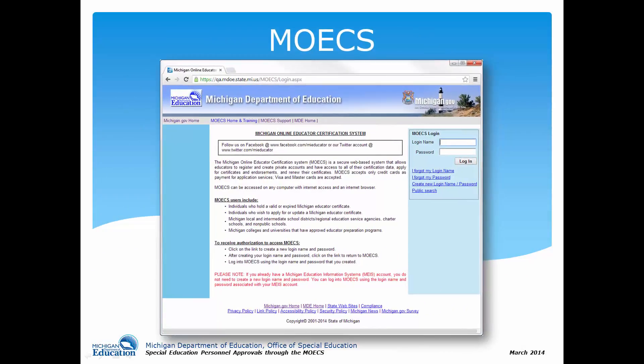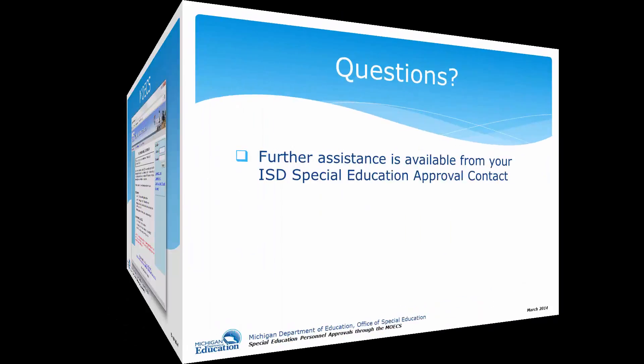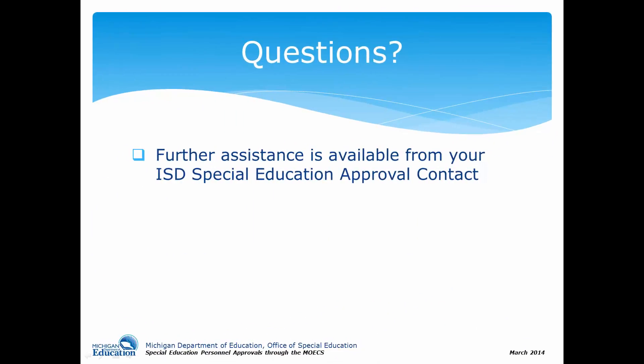This concludes the procedures for processing a request by a local school district for special education personnel approval through the MOECS. If you have questions regarding processing an approval, please seek assistance from your ISD Special Education Approval Contact. A list of contacts can be downloaded from the OSE Special Education Approvals webpage found under Contact Information.